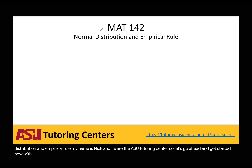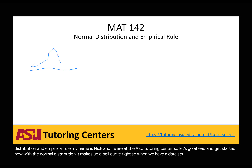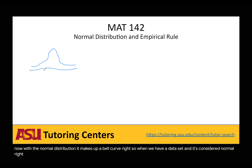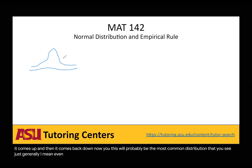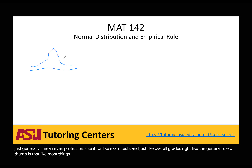With the normal distribution, it makes up a bell curve. So when we have a data set and it's considered normal, all of the data points graphed on a frequency chart will create a normal distribution — a bell-shaped curve that comes up and then comes back down. This will probably be the most common distribution that you see. Professors use it for exam scores and overall grades, and the general rule of thumb is that most things should follow a normal distribution.